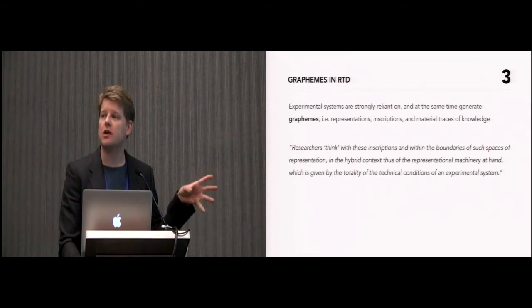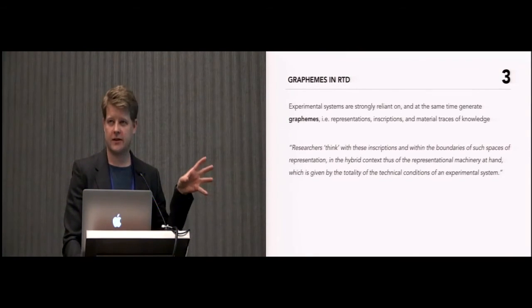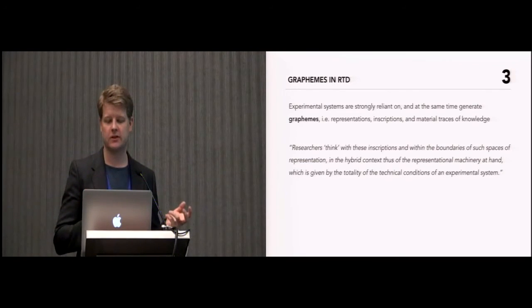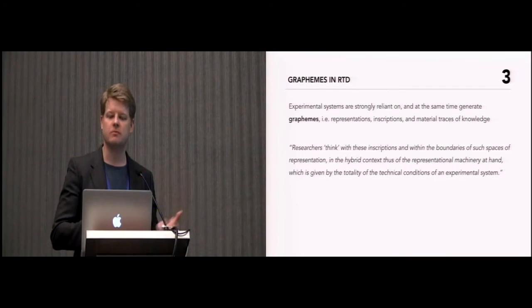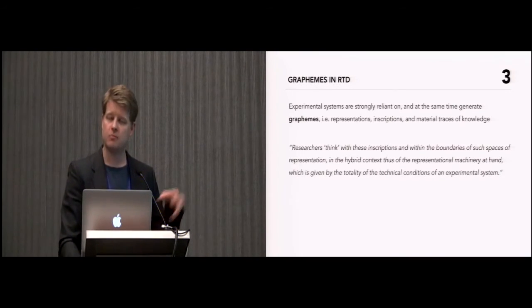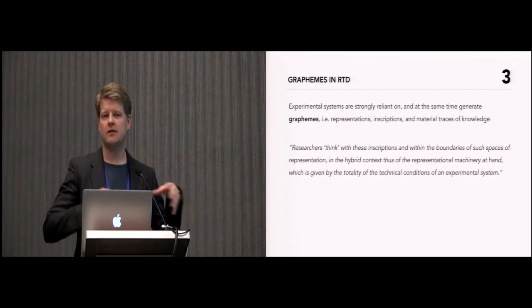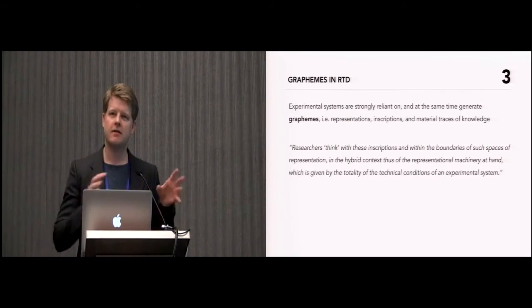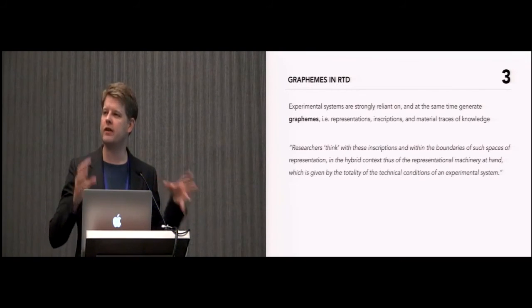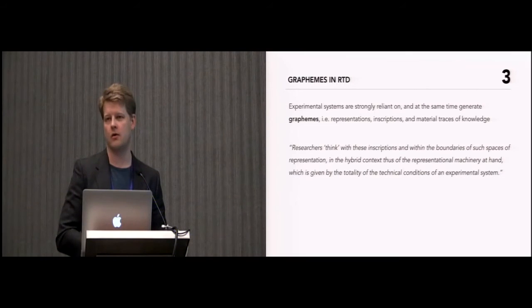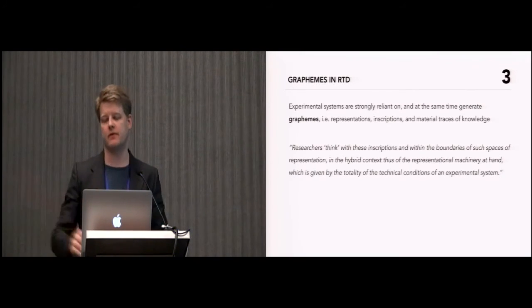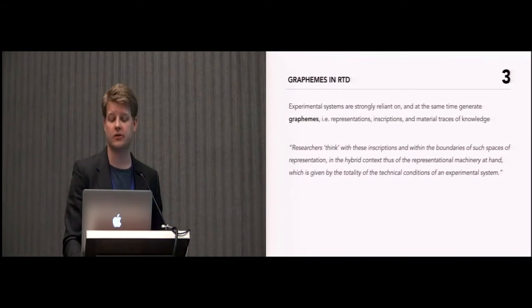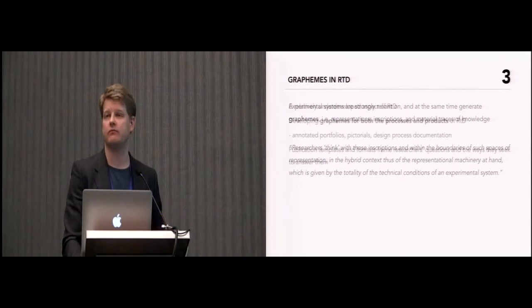A third central concept is that of graphemes. Experimental systems strongly rely on and at the same time generate graphemes, meaning representations, inscriptions, documentation, and material traces of knowledge. And the important thing to note here is that these are not just things we note down as a form of documentation about what had happened. These things actually frame the way we think about the questions that we might answer, and also frames the types of answers that we give. So he says that researchers think with these inscriptions and within the boundaries of such spaces of representation.